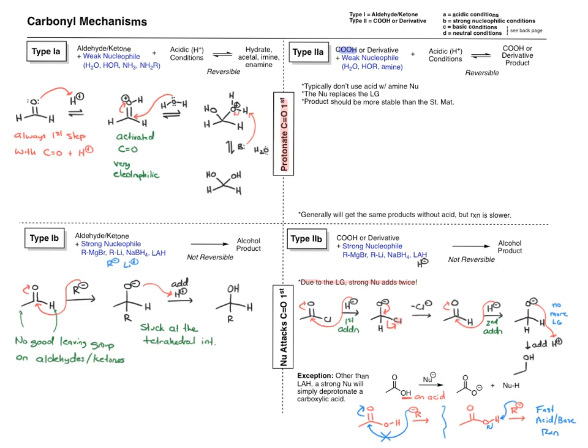This is another reversible reaction. Just like we learned in the Type 1a, when you have an aldehyde or ketone plus an acid, the first step is always to protonate it. That's going to be the same deal if you have a carboxylic acid or derivative — the first step is to protonate the carbonyl. Let's zoom in and take a look at how to react the carboxylic acid with an alcohol.